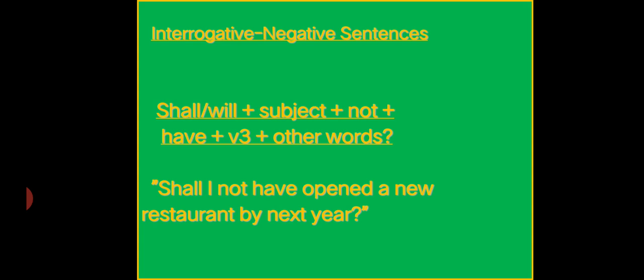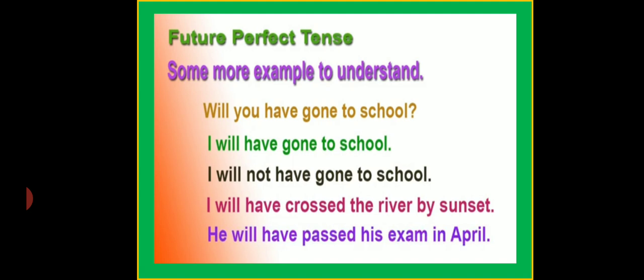Next is interrogative negative sentences. The structure is: shall or will, then subject, then not, then have, then verb's third form plus other words with interrogative sign. For example: shall I not have opened a new restaurant by next year? Okay students, it's a very easy concept. I hope you get it very well. I have some more examples to make it more understandable.